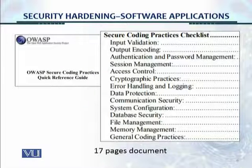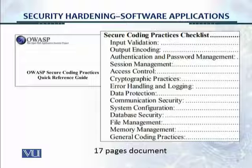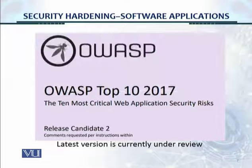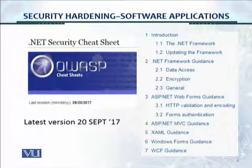These are screenshots from the OWASP Secure Coding Practices Quick Reference Guide. The control areas covered include: input validation, output encoding, authentication and password management, session management, access control, cryptographic practices, error handling and logging, data protection, communication security, system configuration, database security, file management, memory management, and general coding practices — all summarized in 17 pages with actual checklists. There's also the OWASP Top 10 2017 Release Candidate 2, still being finalized, and the .NET Security Cheat Sheet covering .NET Framework, ASP.NET Web Forms, and ASP.NET MVC guidance.